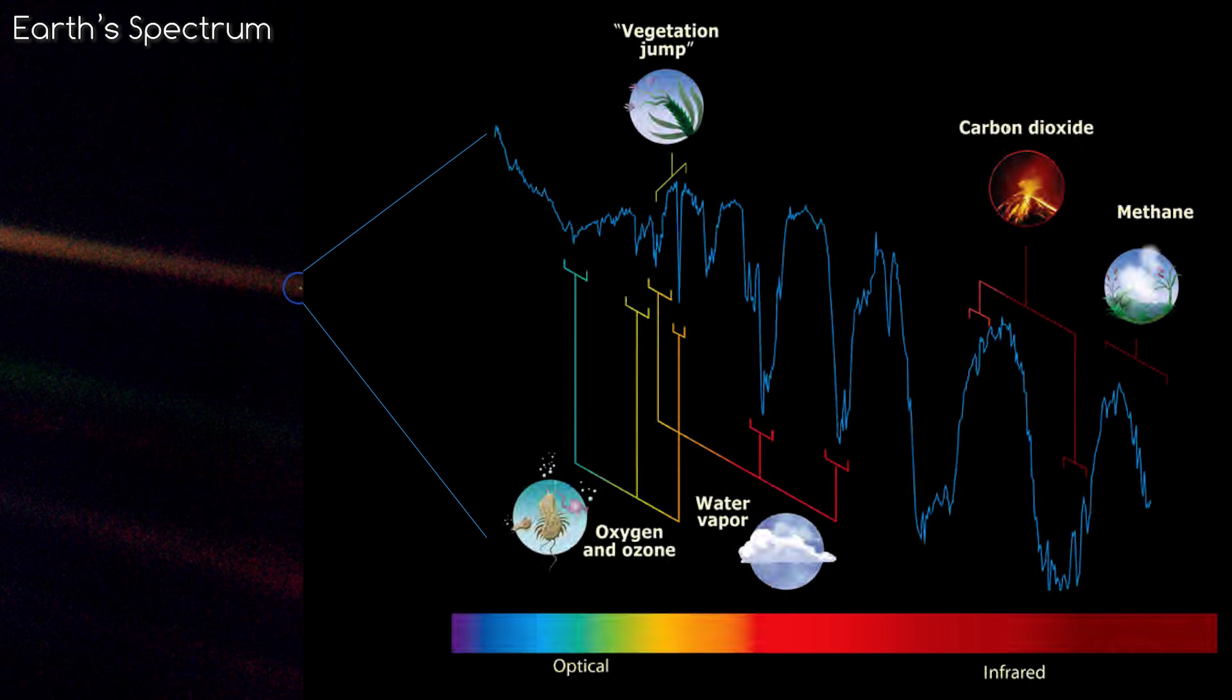The dips in this image show what Earth's spectrum looks like as sunlight passes through the atmosphere. The dips show that oxygen is present, as well as water vapour, carbon dioxide and methane. These gases all absorb the sun's light at these wavelengths.